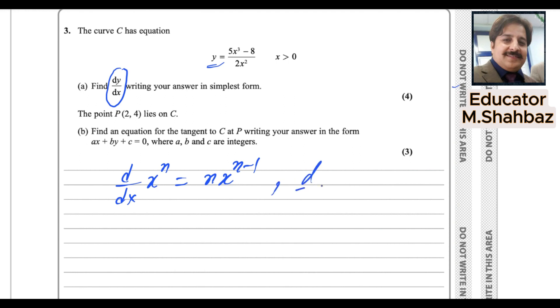And the other formula, derivative of a constant number. Any constant number like 4, 5, 6, 10, 20, whatever the number is, it is always equals to 0. And second thing,